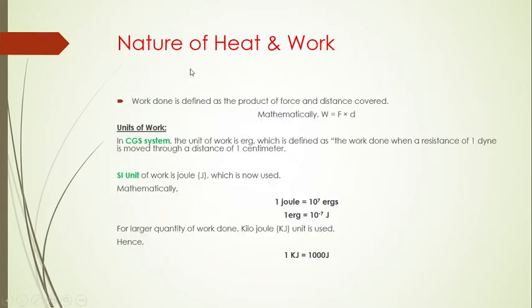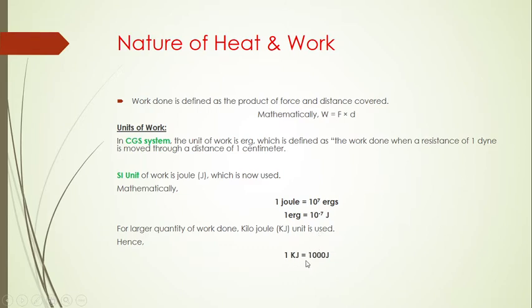Work is defined as the product of force and distance: W = F × d. In the CGS system, the unit of work is the erg — work done when a resistance of 1 dyne is moved through 1 cm. In SI, the unit is the joule: 1 joule = 10⁷ erg, and 1 erg = 10⁻⁷ joule. For larger quantities, kilojoules are used: 1 kJ = 1000 J.